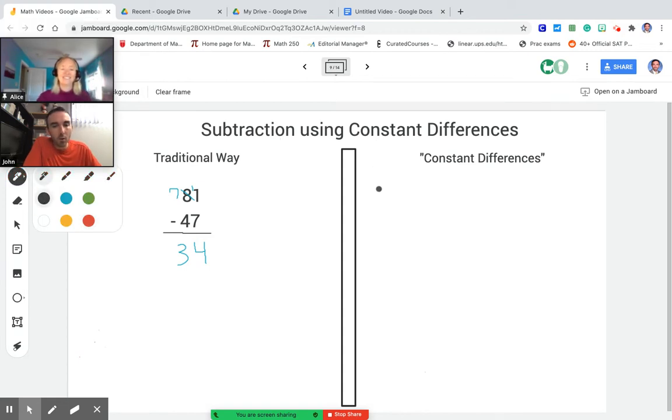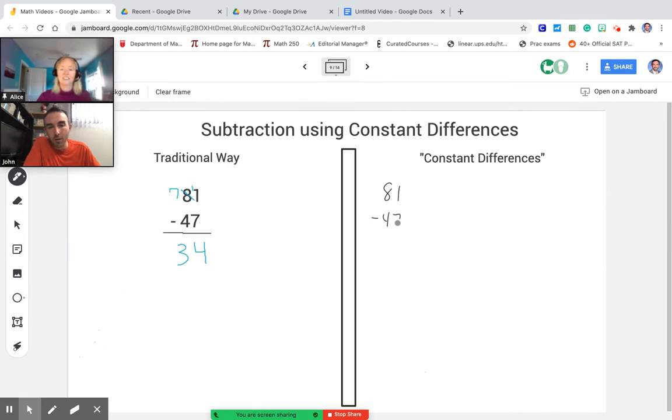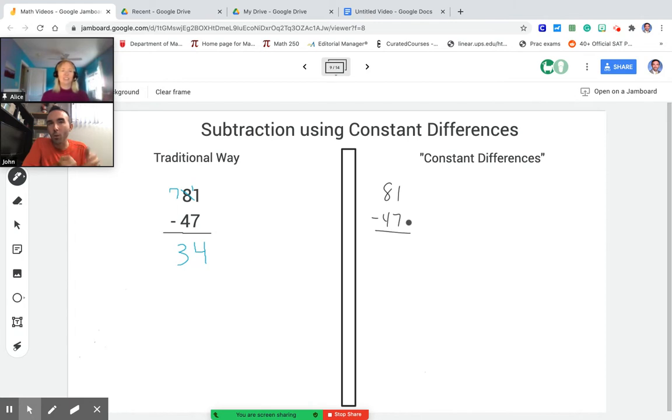So in elementary school if students have to do a problem like 81 minus 47 they might find that process a little confusing. They might not understand what it means to cross out an 8 and make it a 7 or borrow a 1. That might seem like mindless stuff to them.